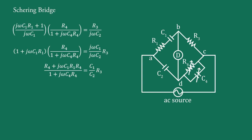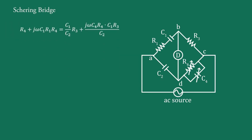Expanding and simplifying, we get: R4 + jωC1·R1·R4 = (C1/C2)·R3 + jω·C4·R4·(C1/C2)·R3. Now comparing the real and imaginary parts of both sides gives us two separate equations.